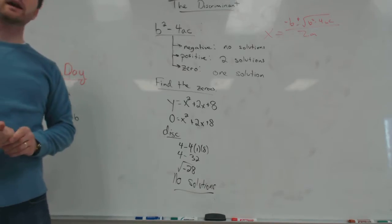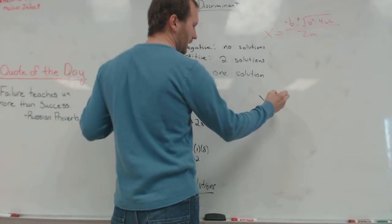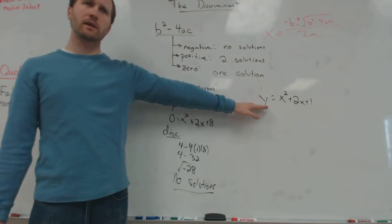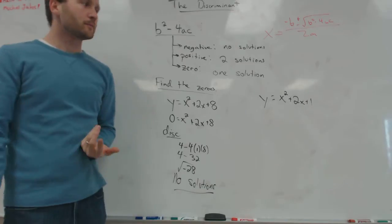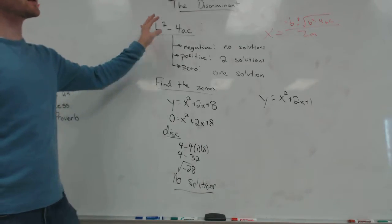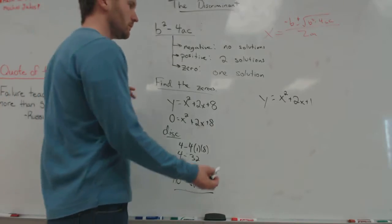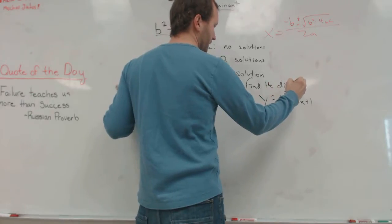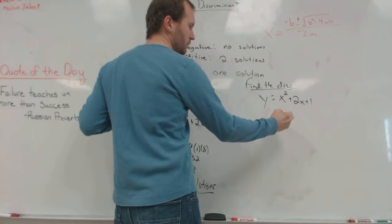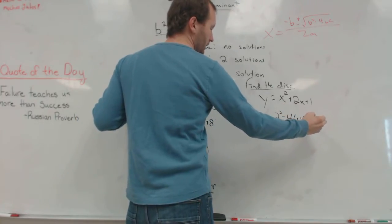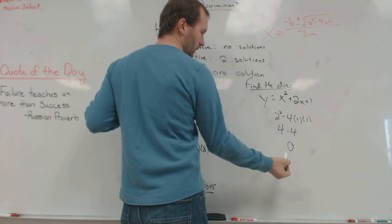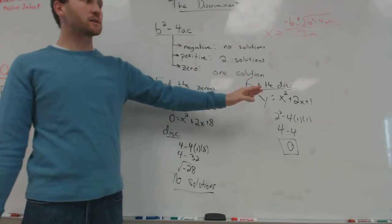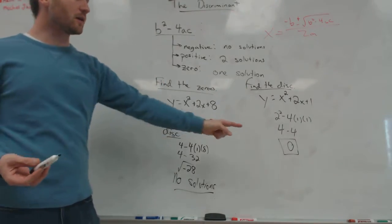On tests you may be asked to simply find the discriminant of a quadratic, like y equals x squared plus 2x plus 1. That just means compute b squared minus 4ac. Here: 2 squared minus 4 times 1 times 1 equals 4 minus 4, which is 0. So the discriminant is 0. A follow-up question might ask how many solutions it has — and you can answer one solution without actually solving it.